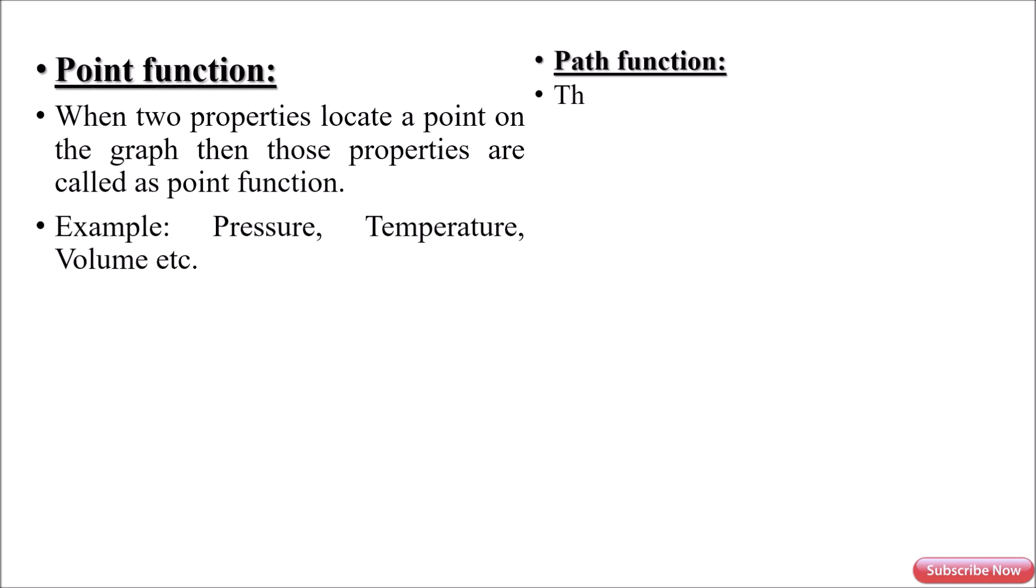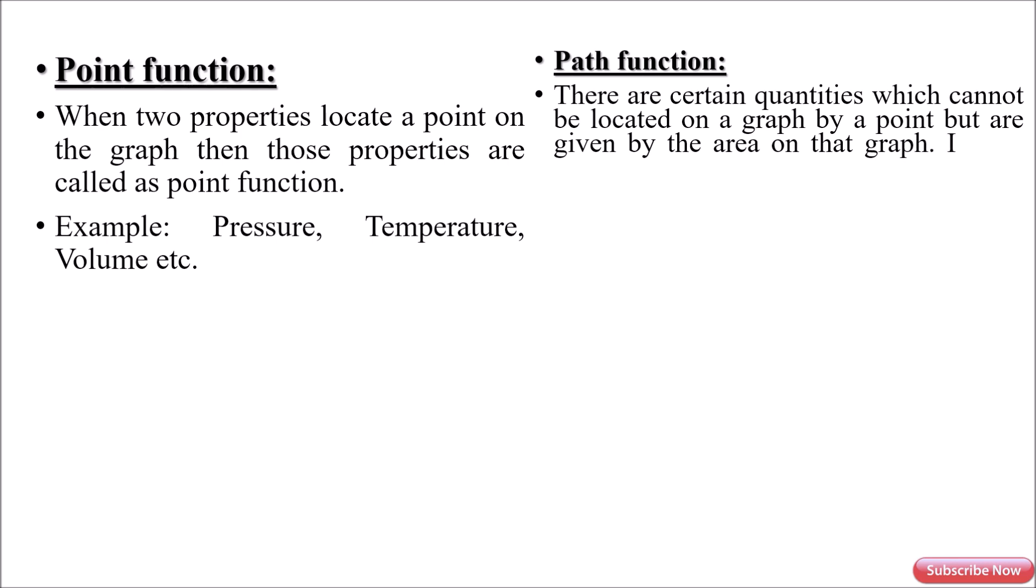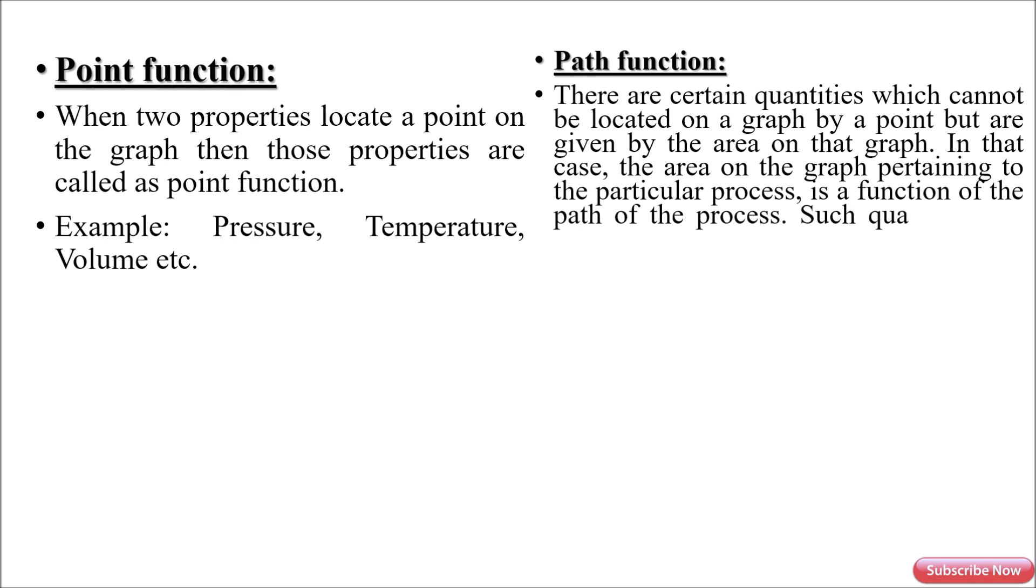Path function. There are certain quantities which cannot be located on a graph by a point, but are given by the area on that graph. In that case, the area on the graph pertaining to the particular process is a function of the path of the process. Such quantities are called path functions. Example: heat and work.